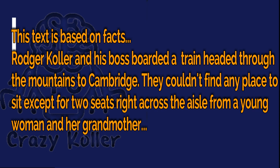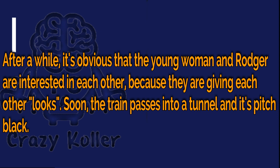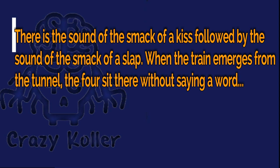This text is based on facts. Roger Koller and his boss boarded a train headed through the mountains to Cambridge. They couldn't find any place to sit except for two seats right across the aisle from a young woman and her grandmother. After a while, it's obvious that the young woman and Roger are interested in each other because they're giving each other looks. Soon, the train passes into a tunnel and it's pitch black. There is a sound of the smack of a kiss followed by the sound of the smack of a slap.